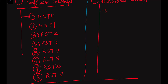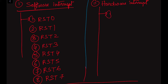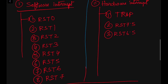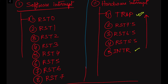In the case of 8085, there are five different types of hardware interrupts: TRAP, RST 7.5, RST 6.5, RST 5.5, and INTR. Regarding priority, TRAP has the highest priority and INTR has the lowest priority among the hardware interrupts.